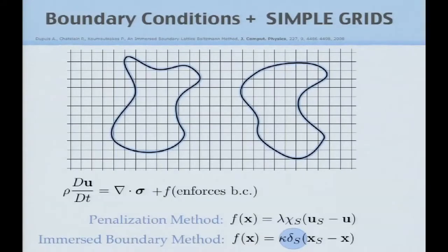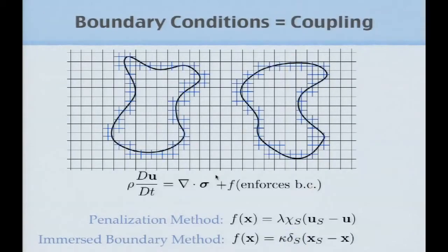For domains with boundaries, we adopt simple Cartesian grids — enabling effective wavelet adaptivity — and modify governing equations with a forcing term that enforces boundary conditions. Techniques like Peskin's immersed boundary method and the penalization method by Angot enforce boundary conditions differently. We adopt these in our solvers and apply multi-resolution, treating bodies as implicit level set surfaces. Since level sets support adaptive multi-resolution, we can increase resolution near boundaries. These methods are known to be low order, but increasing resolution enables highly accurate simulations.